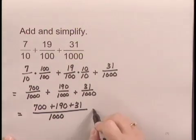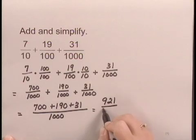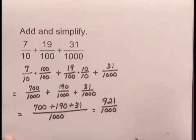And adding the numerators, we get 921 over 1,000. Now we do need to simplify, and to simplify we would factor the numerator, factor the denominator, and we would find in this case that there are no common factors. So this is the simplified form of the sum.